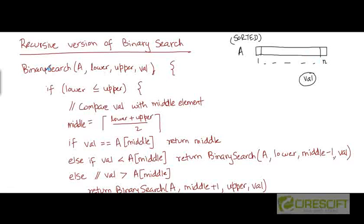The function we are going to use is binary search, which takes in four parameters: the array a within which you are searching, and two indices, lower and upper, which indicate the left endpoint and the right endpoint of the sub-array within a within which you are searching for the value.